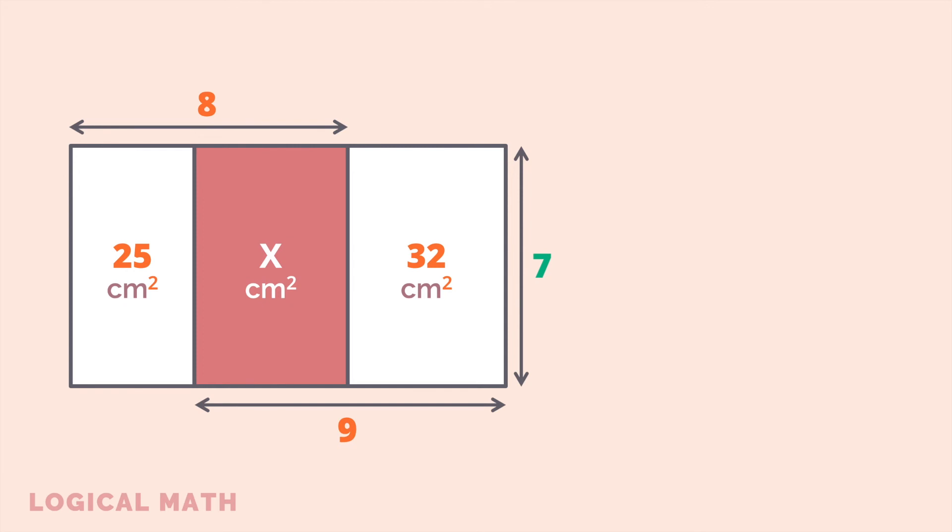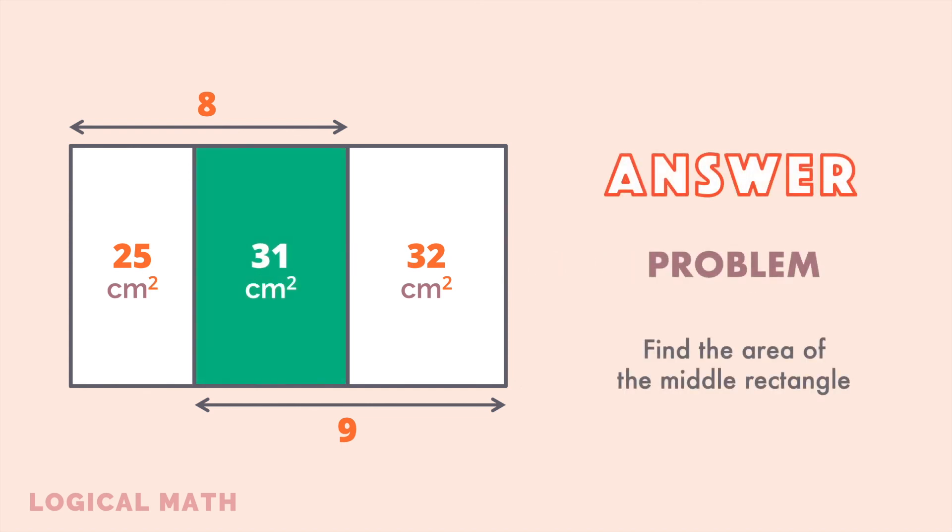Therefore, the height of the large rectangle is 7 centimeters. Afterward, in the equation we can replace Y with 7 to get the value for X. Hence, the area of the middle rectangle is equal to 56 minus 25, which is equal to 31, and that's the correct answer to the problem.